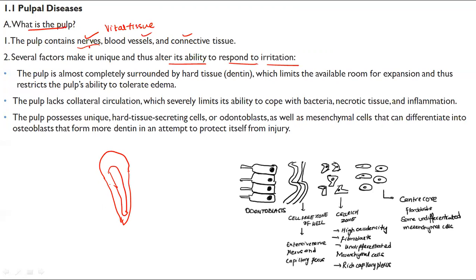There is very limited distance for the pulp to expand. If there is any infection, it cannot expand beyond a particular space. The pulp is almost completely surrounded by hard tissue, which limits the available room for expansion and restricts the pulp's ability to tolerate edema. If there is swelling, it cannot expand beyond a particular point, and there is no collateral circulation — so it cannot cope with heavy bacteria, and after a certain level of inflammation it cannot cope.